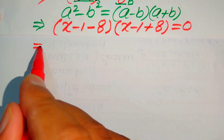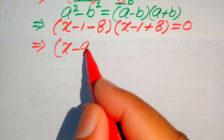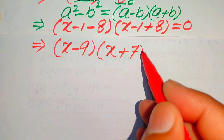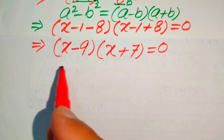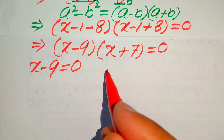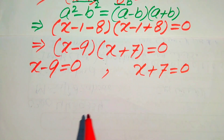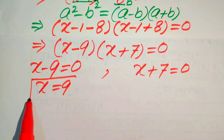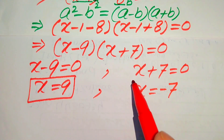After simplification, we get (x minus 9)(x plus 7) equals 0. We break this into two cases: the first case is x minus 9 equals 0, giving x equals 9; and the second case is x plus 7 equals 0, giving x equals minus 7. From both methods we get the same two roots of the given equation.